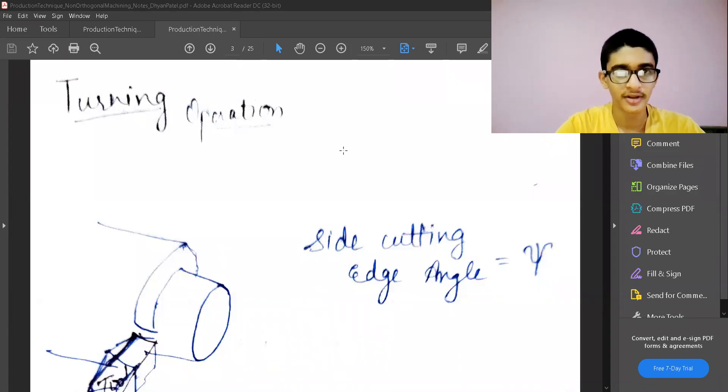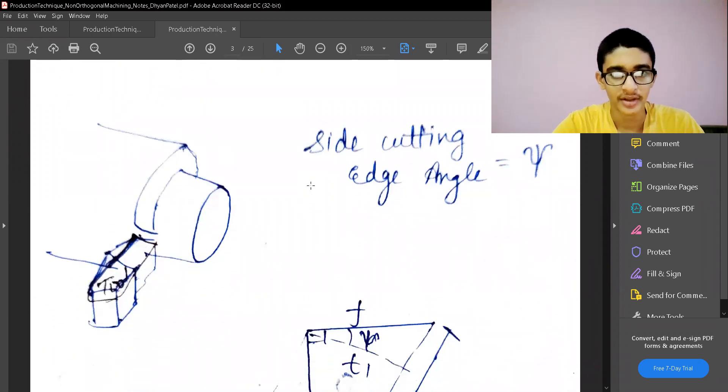Now let's come to another non-orthogonal machining process, which is turning operation. I will reiterate that all things related to non-orthogonal machining will remain almost constant - how I'm going to model it, the value of psi (the side cutting edge angle), which has been introduced and will be non-zero. It was zero earlier; it will be non-zero now. Almost all things remain the same.